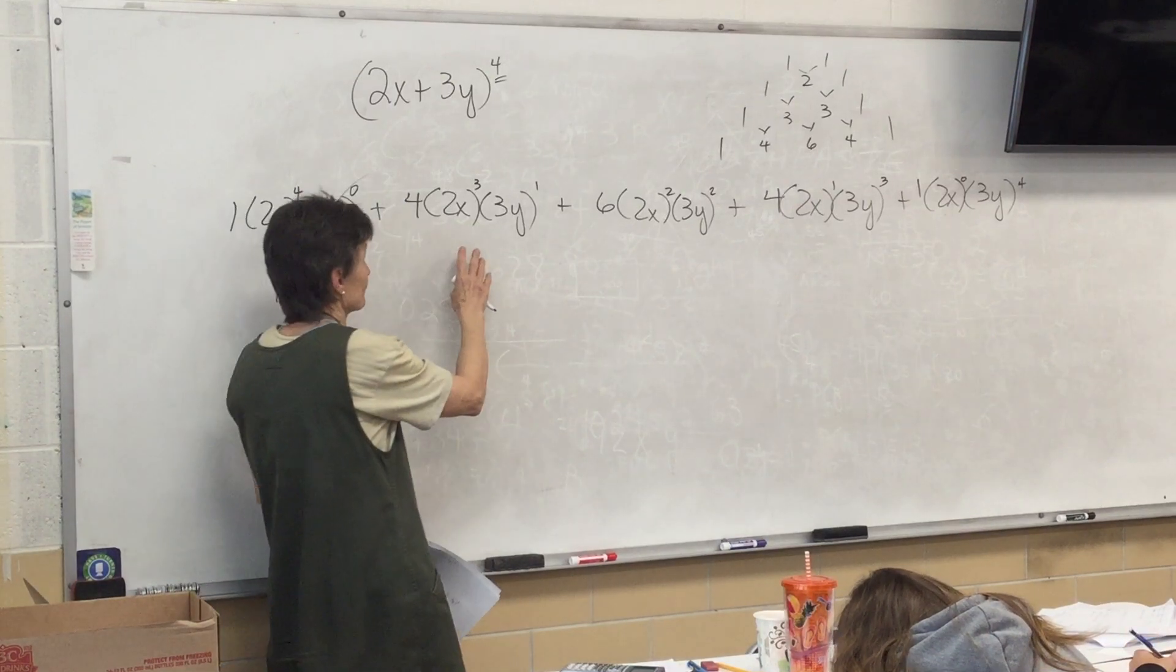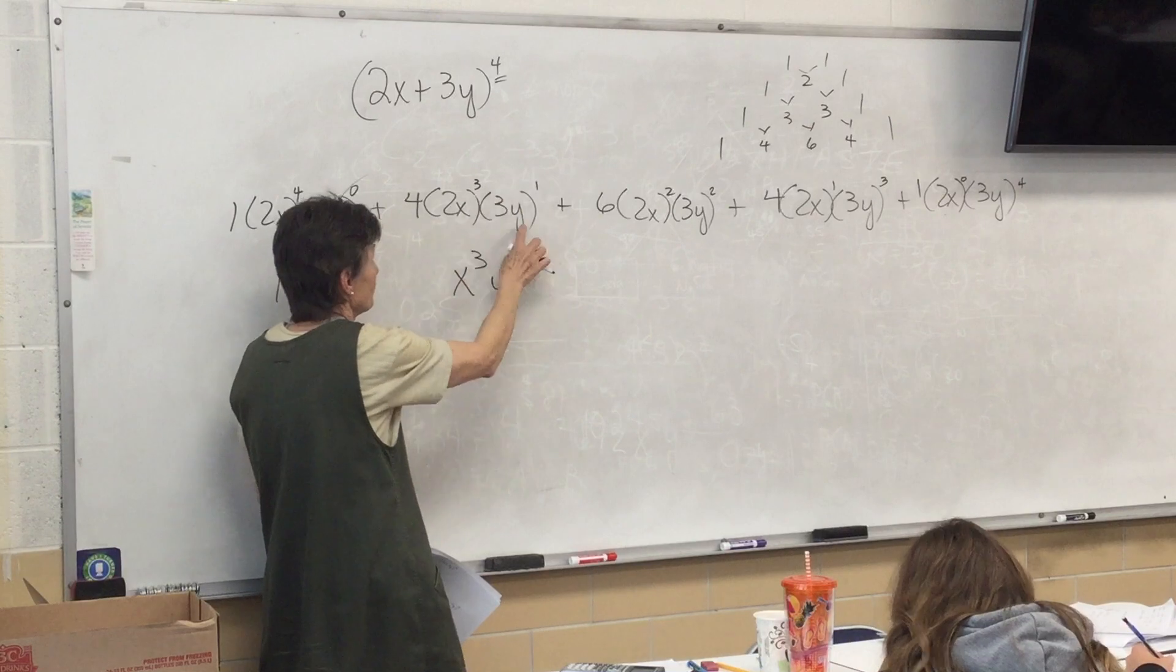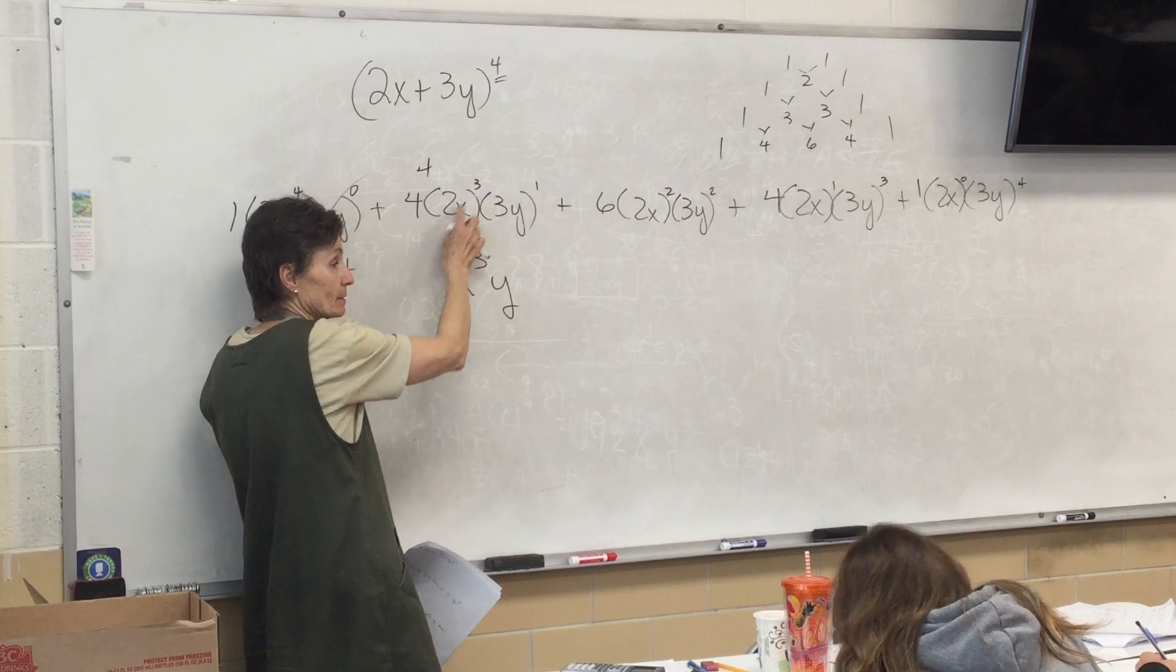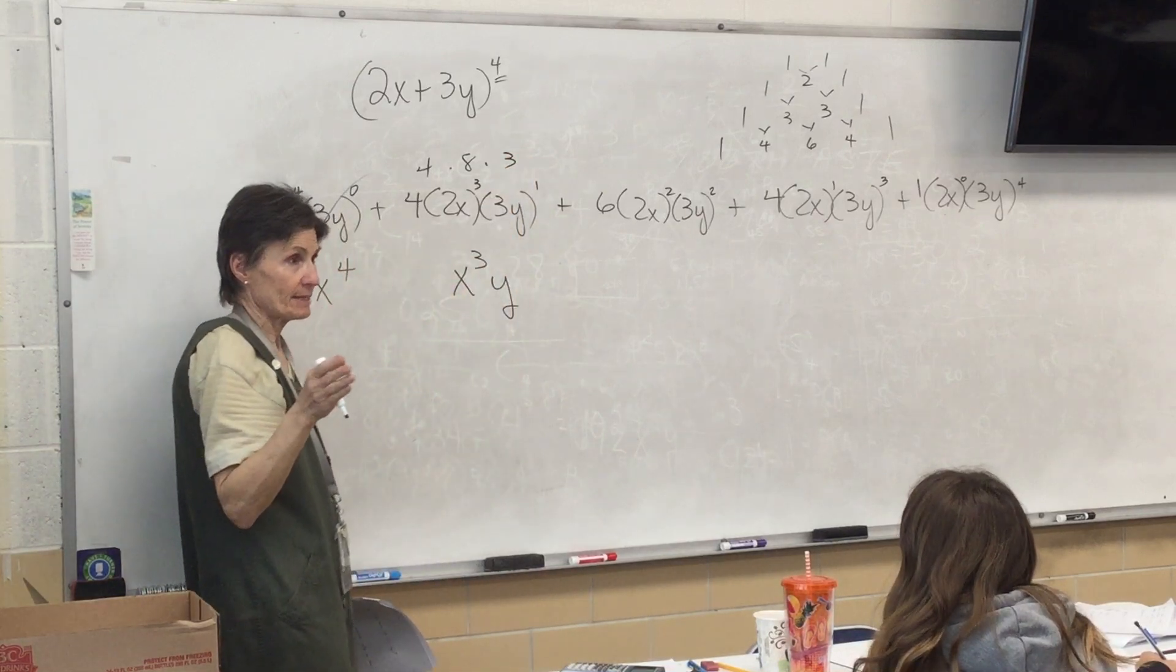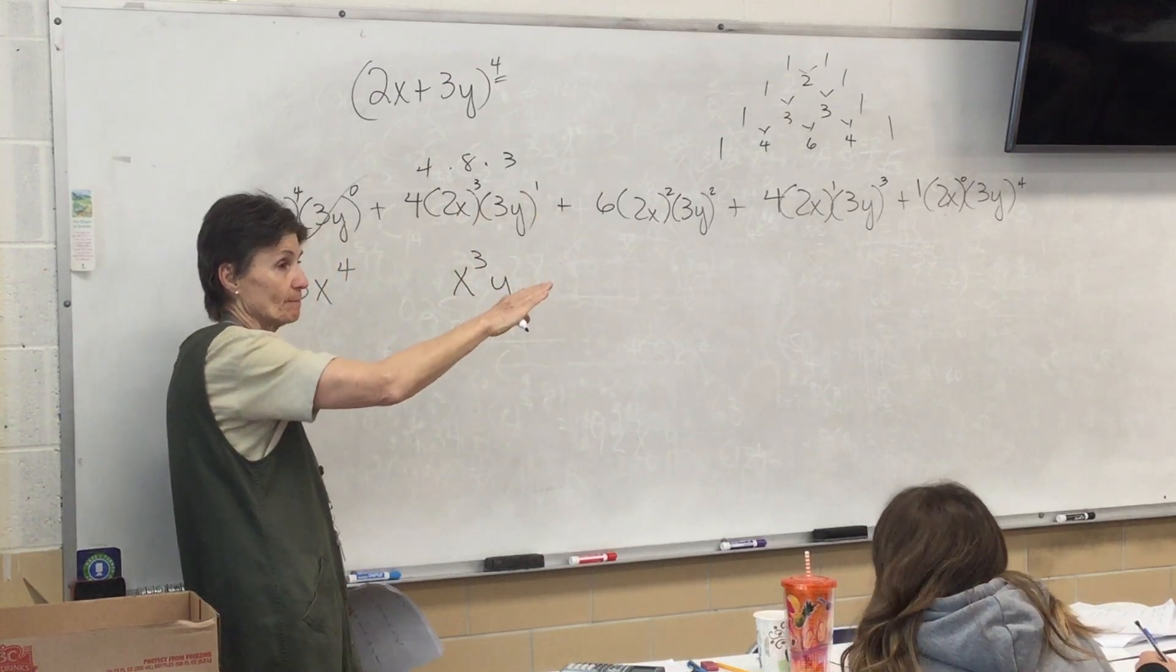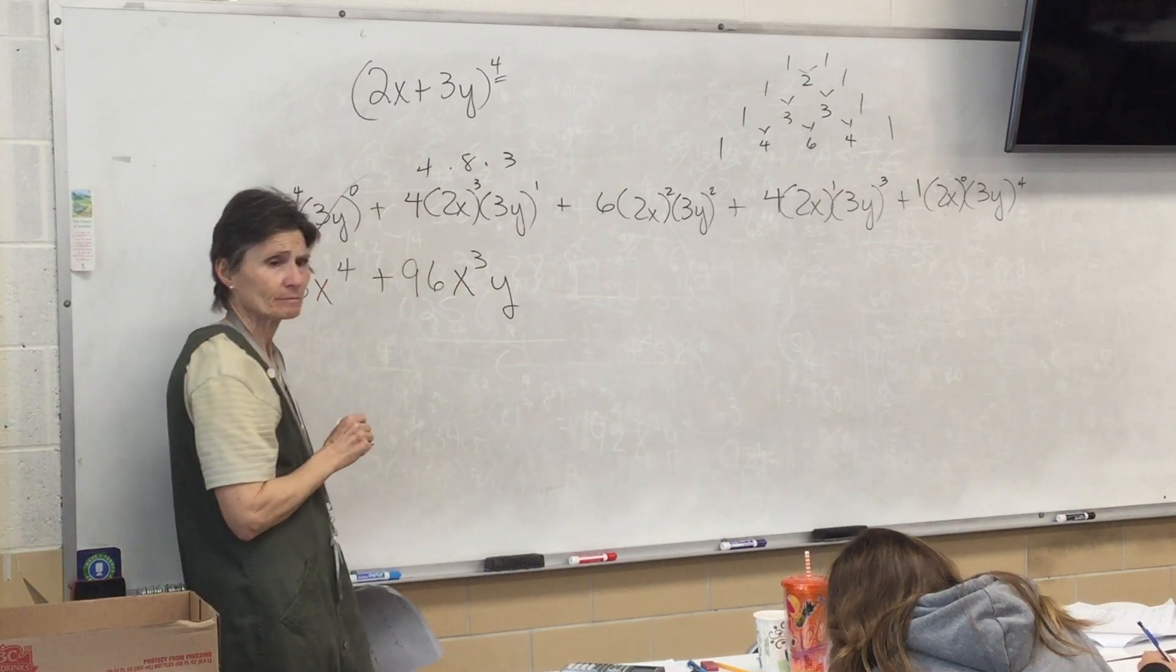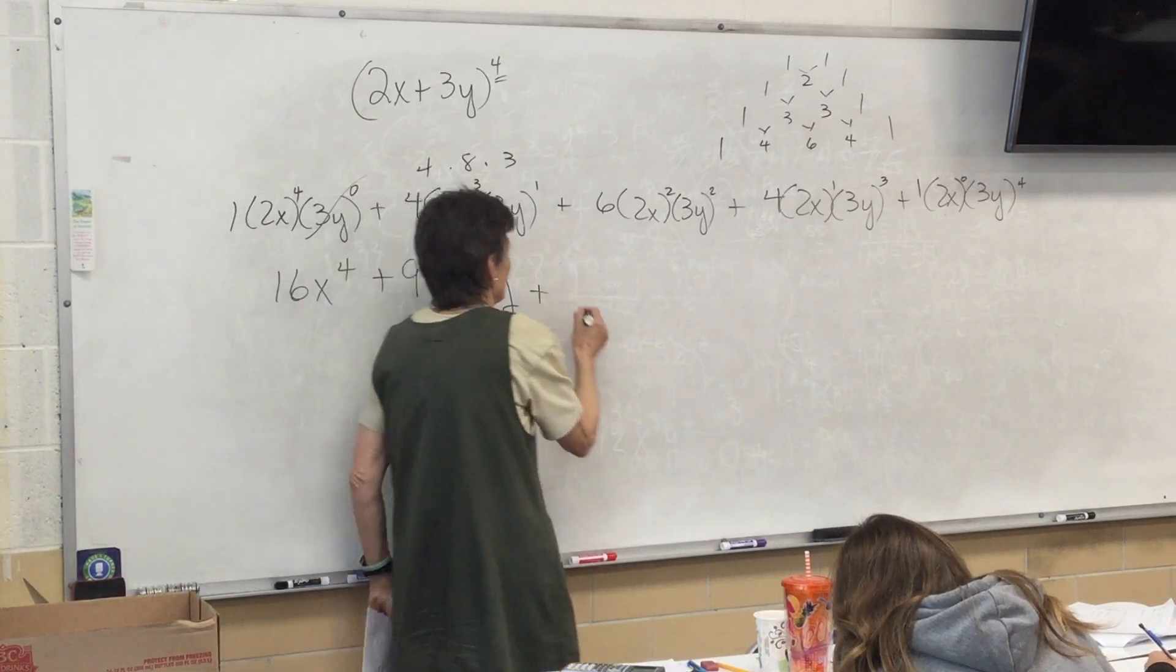Alright. Now, what about here? Be careful. I know it's going to be x cubed y. But I have a 4 and a what? 8. And a 3. And those are all multiplied. Each little group here is all times. So, 4 times 8 times 3 is 96.